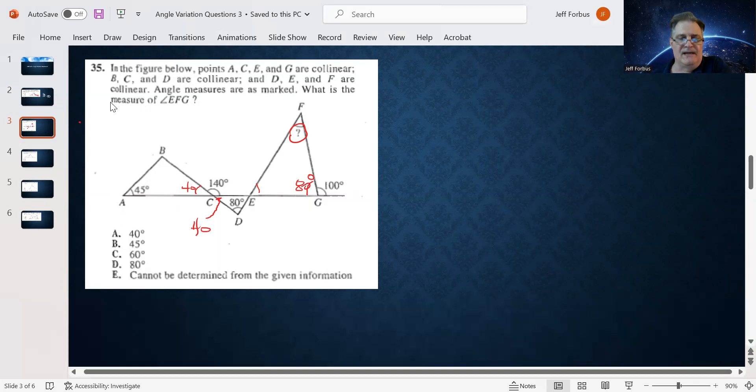So that implies angle E right here of triangle CDE must be, well 80 and 40 is 120, so we need 60 more. So E is 60 degrees. So therefore angle E in triangle EFG is 60 degrees. So now we have 80 and 60 showing. That's 140 degrees. Subtract that from 180, and that leaves you 40. So angle F is going to be 40 degrees, which is going to be answer choice A.